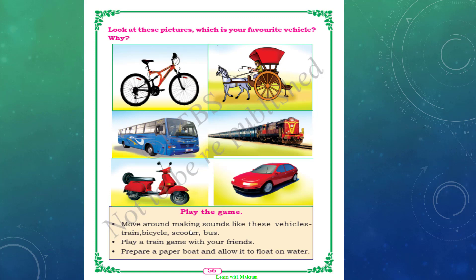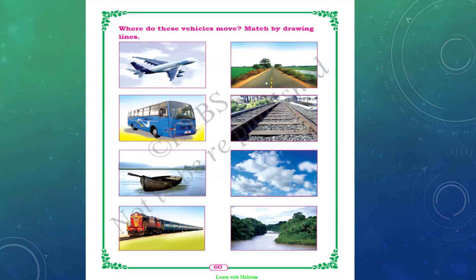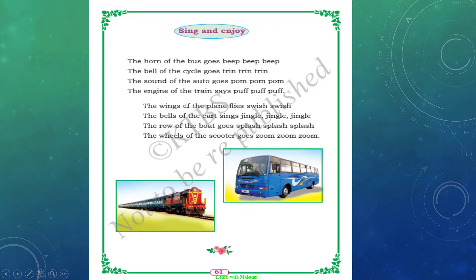Where do these vehicles move? Match by drawing lines. The first one is an aeroplane — where does it move? In the sky. Bus moves on the road. Boat moves on water. Train moves on rails. Are you clear with this?